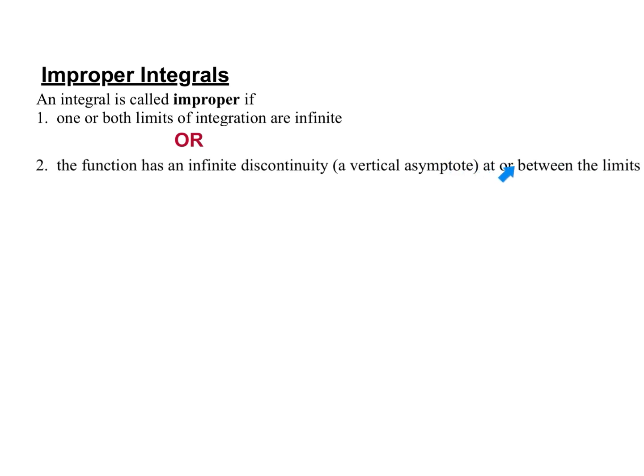The other case is when we have a discontinuity — a vertical asymptote — where there's some value for x that forces the denominator to equal zero. That is the other situation where we have an improper integral, and it'll be harder to tell. The first type will be easy — you'll see an infinity on the integration symbol. The second one you'll have to analyze: there's a denominator, there's an x in the denominator, it can be zero when this happens. Those are the two situations to look out for.